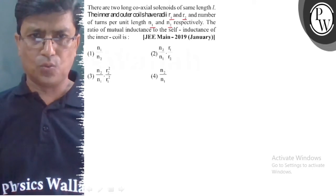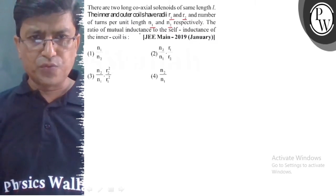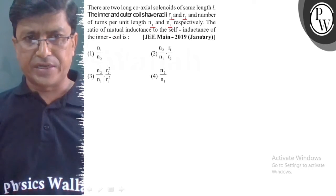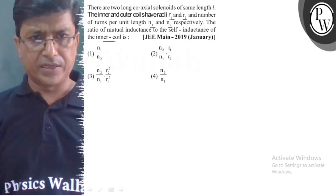The radii is R1 and R2. The ratio of mutual inductance to the self-inductance of the inner coil is asked.